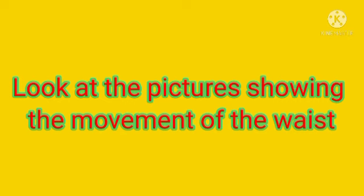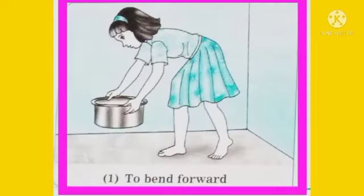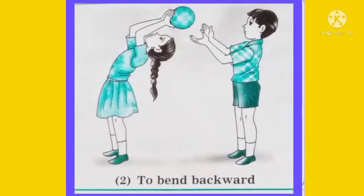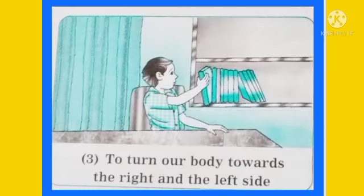In the first picture, the girl is keeping a vessel down, so she is bending forward. In the second picture, they are playing with the ball. The girl passes the ball to the back side, so she has to bend backward — you can see that in the picture.